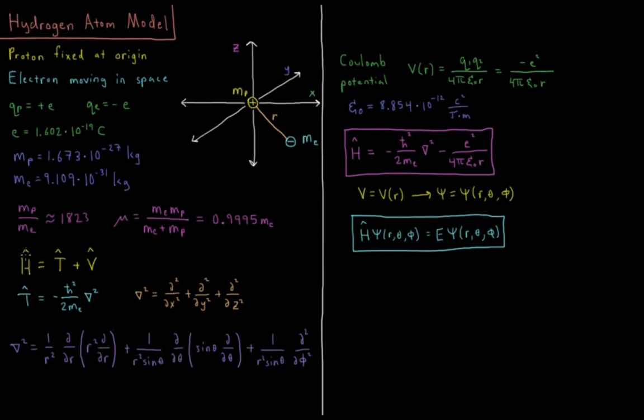In order to solve for the wave functions and energies of this hydrogen atom model, we need to define our Hamiltonian operator. The Hamiltonian, as in every case, is kinetic energy plus potential energy operator. Kinetic energy operator is minus h-bar squared over 2 times mass of the electron times del squared, del squared being the Laplacian operator. In Cartesian coordinates in three dimensions, that's just the sum of the second partial derivative with respect to x, y, and z.